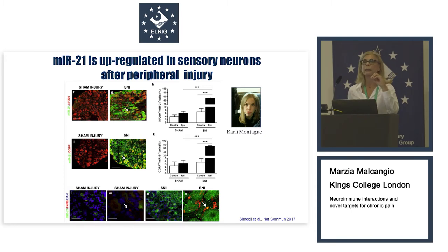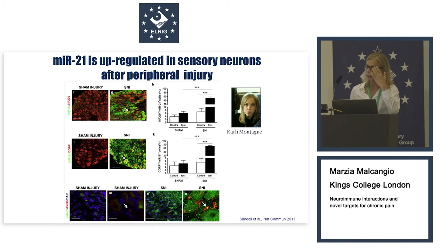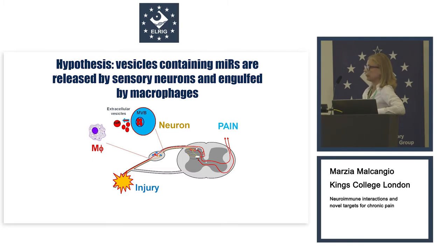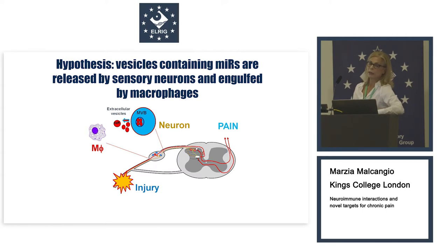We also observed, in neurons after peripheral nerve injury, some cells that are macrophages — identified by macrophage marker staining — that had microRNA-21 fluorescence inside them. We postulated that after peripheral nerve injury, sensory neurons in the dorsal root ganglia express and then release microRNA-21, and macrophages that infiltrate the ganglia following nerve injury would engulf this microRNA — thereby mediating neuroimmune communication.